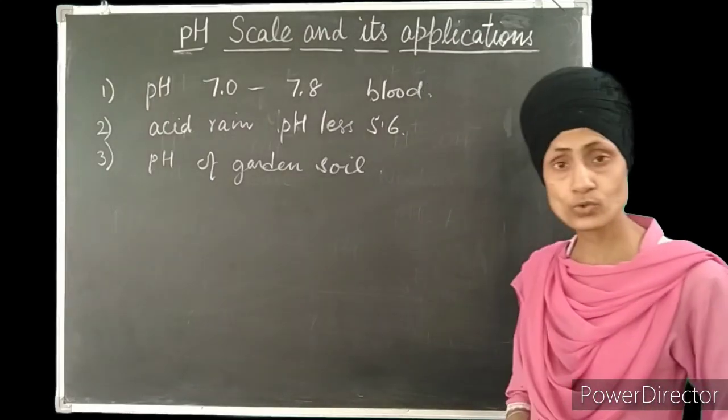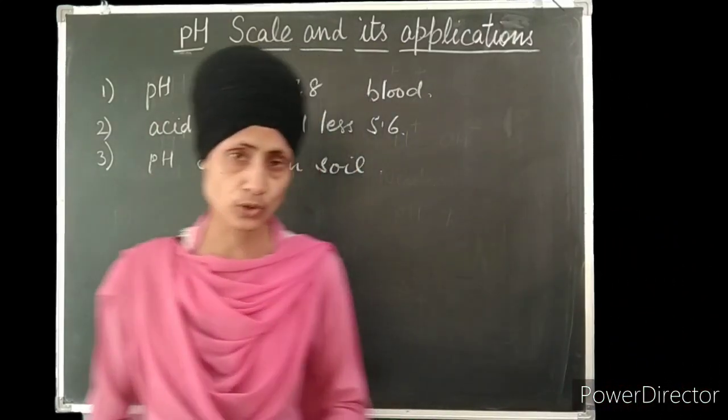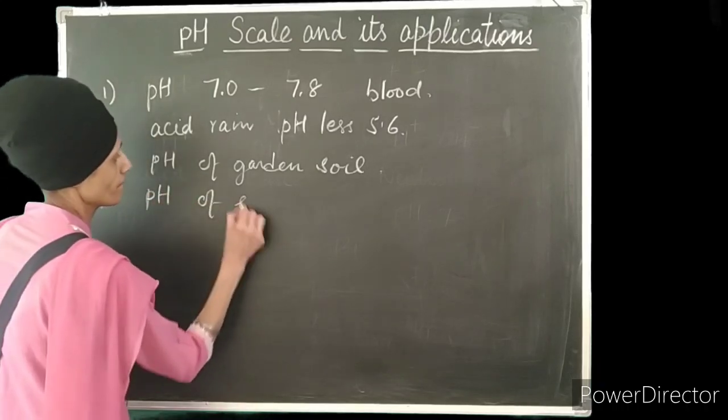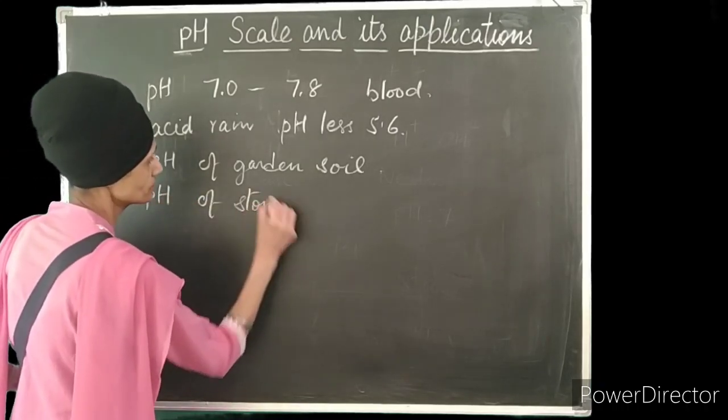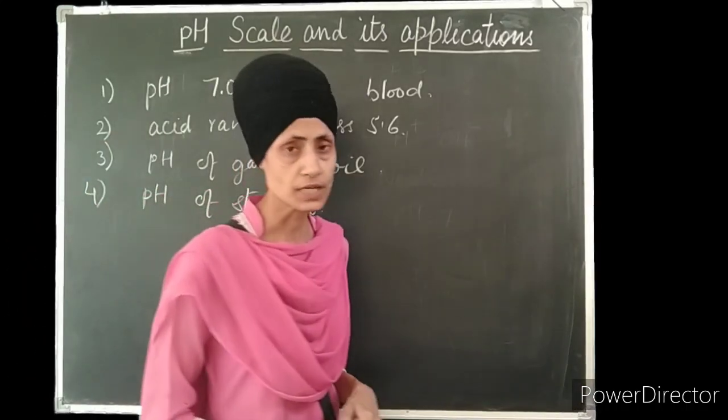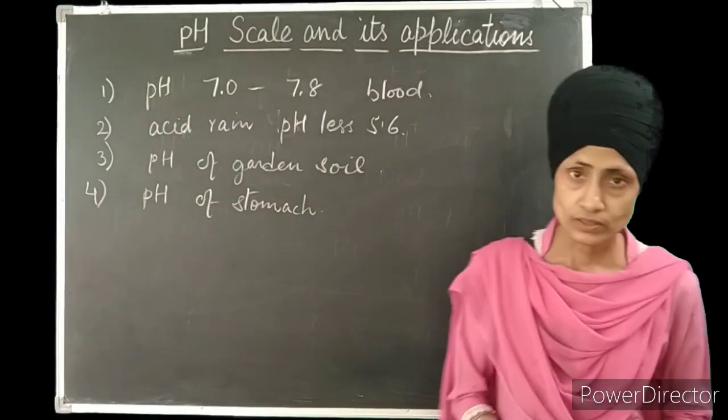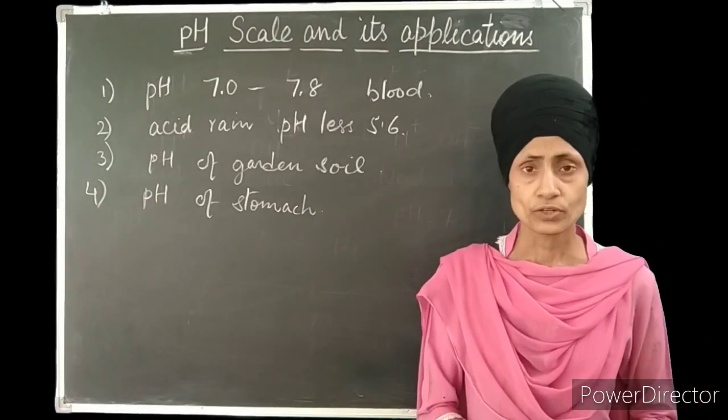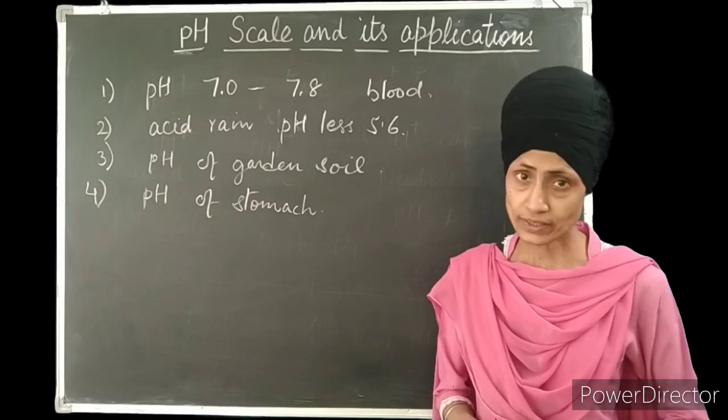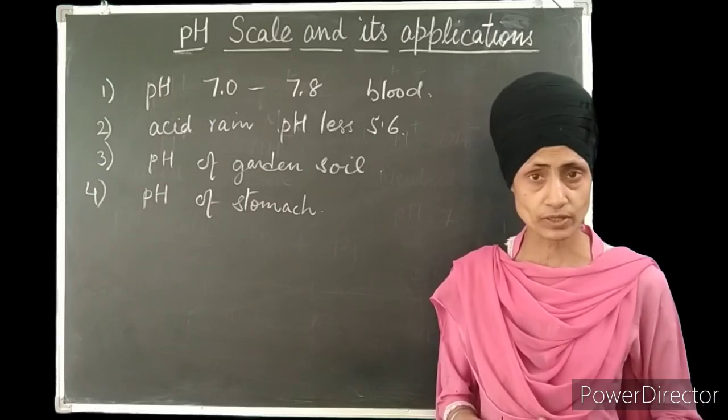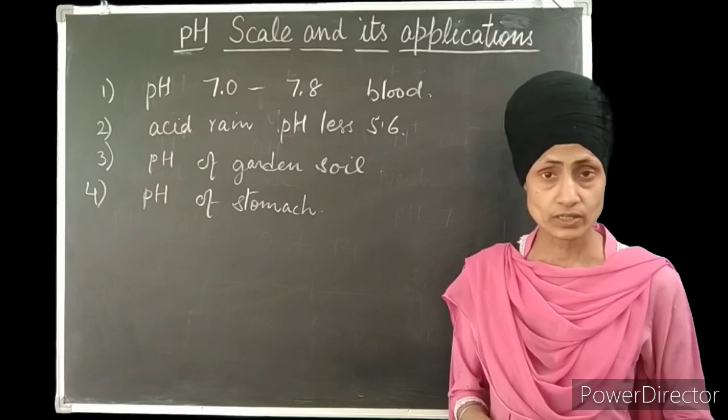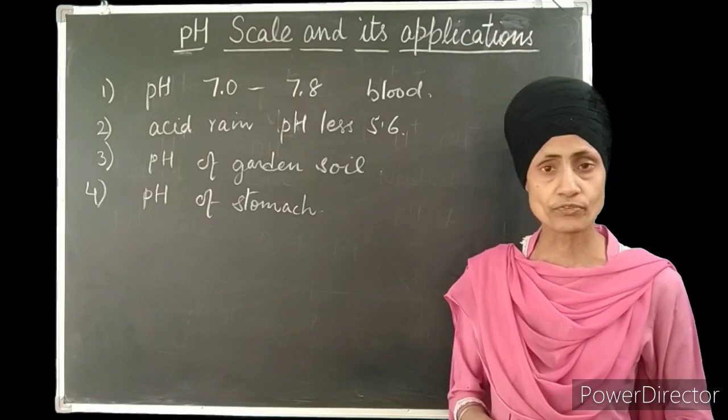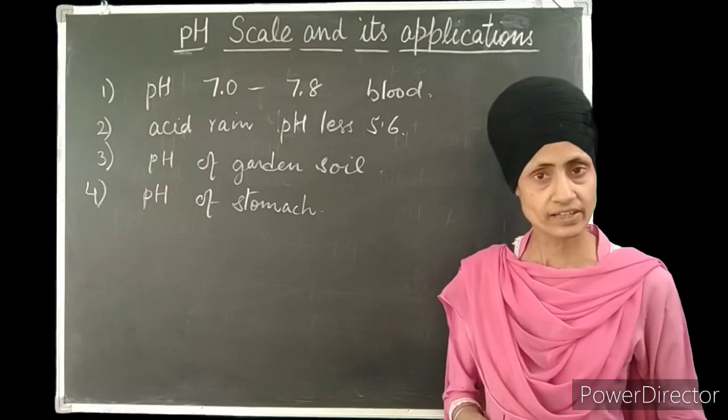Now pH is also used in our stomach. You know that there is hydrochloric acid present in our stomach which helps in digestion. But what happens if there is excessive release of hydrochloric acid in the stomach? We suffer from acidity. We feel pain in the stomach, irritation in the stomach. So when we feel uneasy, we have to neutralize this excess acid by using a form of medicines called antacids.